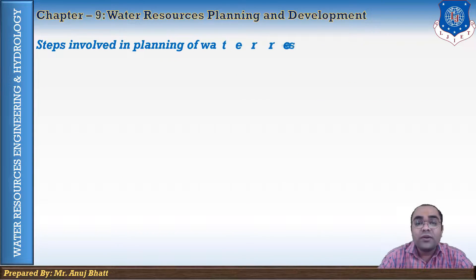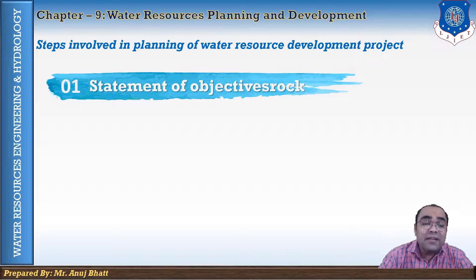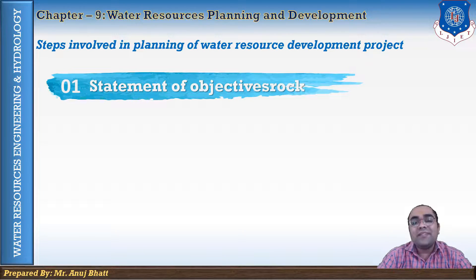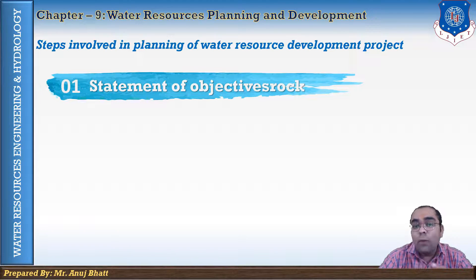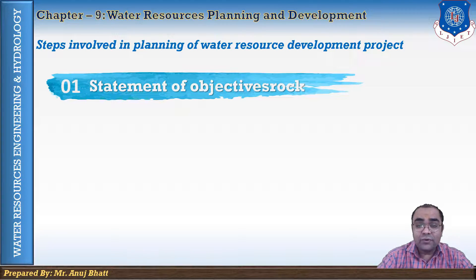Steps for the planning of water resource development: the first is the statement of objectives. The first step to start the planning process is the statement of objectives. Before the actual planning of water resources development, it is essential that the objective of the project should be clearly stated. The objectives may however depend on the organization planning for that project.